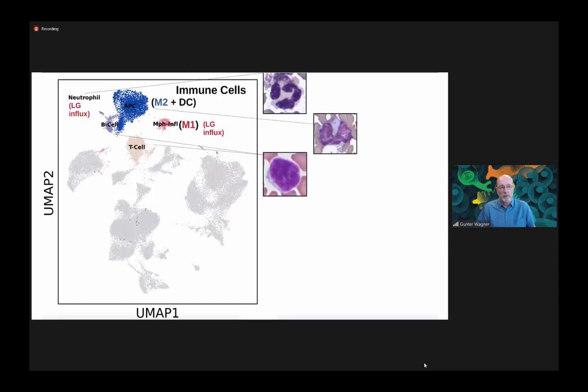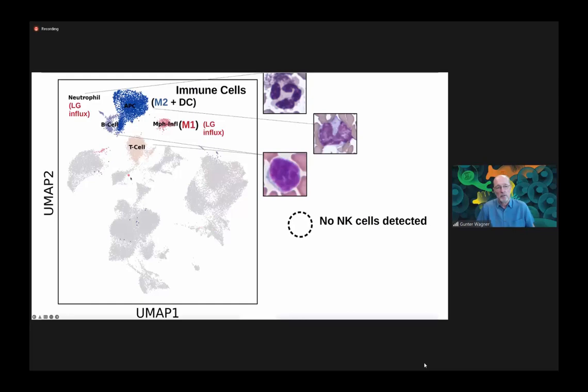Interestingly, even with all additional effort, we found no evidence of NK cells in the opossum uterus. If this absence of evidence is actually evidence of absence, this seems to be one of the major differences between a human endometrium and the opossum, and implicates NK cells as major players in the maintenance of pregnancy — probably an evolutionary innovation of the eutherians.